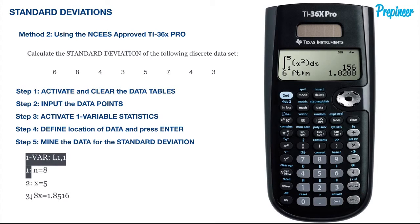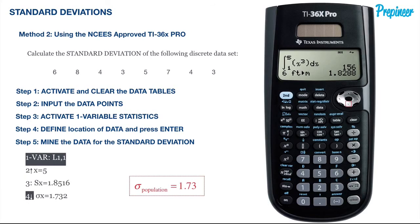Now finally we mine the data for the standard deviation. We will be on a screen with a lot of useful information, but we are looking only for the standard deviation of the data we entered. Knowing we are working with a discrete set of data points, scroll down until you reach sigma X, representing the population standard deviation, which is 1.732.